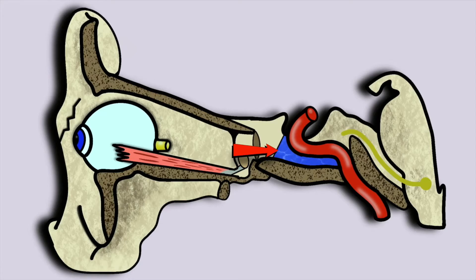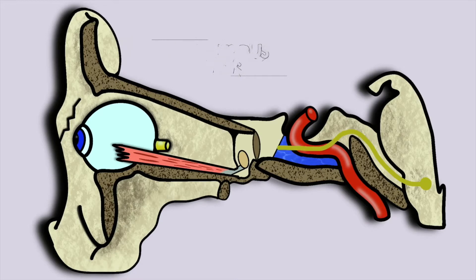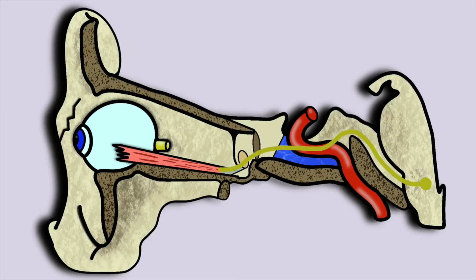Travelling in Dorello's canal, at the tip of the petrous temporal bone the nerve leaves the canal and enters the cavernous sinus. We will cover the cavernous sinus in more detail later on. It travels through the sinus and enters the orbit through the superior orbital fissure.